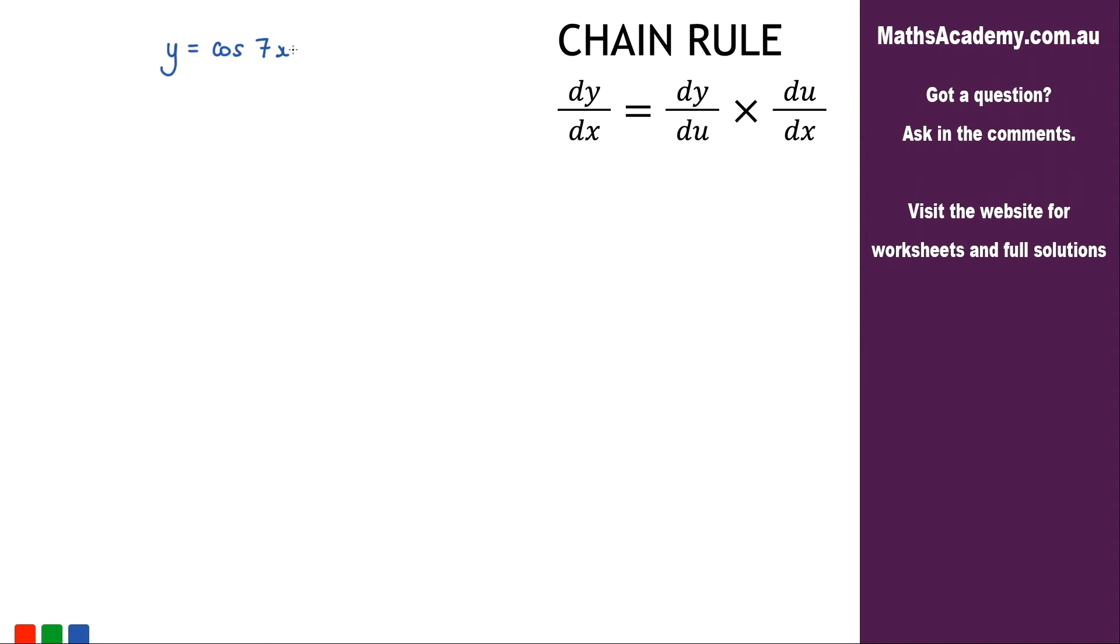Welcome to today's lesson. In today's lesson we are differentiating y equals cosine of 7x. You can see over here we're going to be using the chain rule. So the first thing we need to do is to make the substitution.